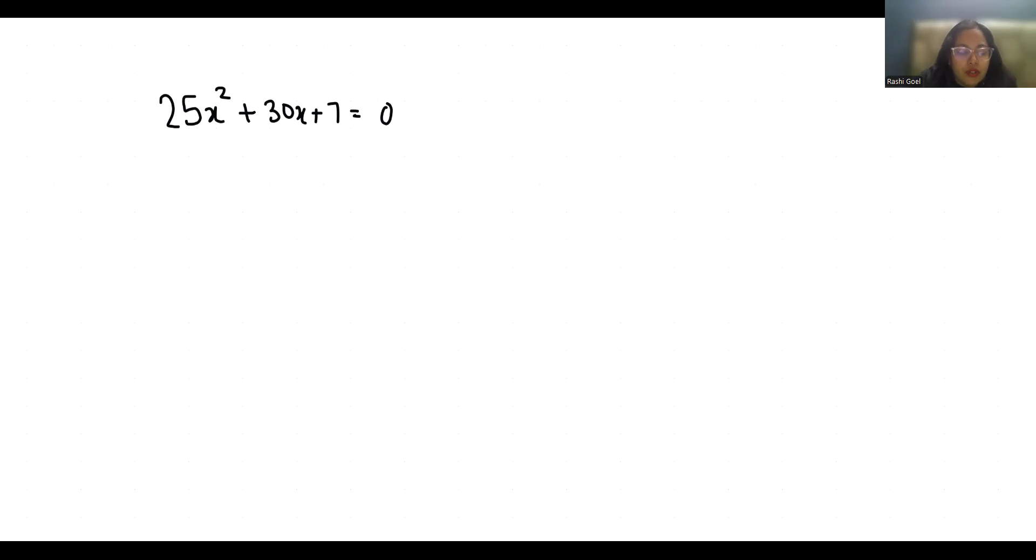So let's start with today's video solution. First I am going to write the values of the coefficients: a is the coefficient of x² which is 25, b is the coefficient of x which is 30, and c is the constant 7.